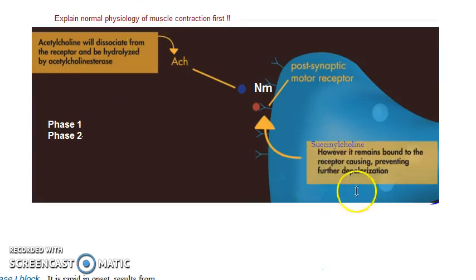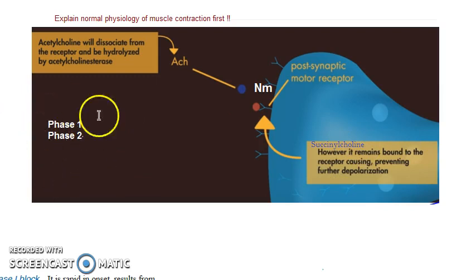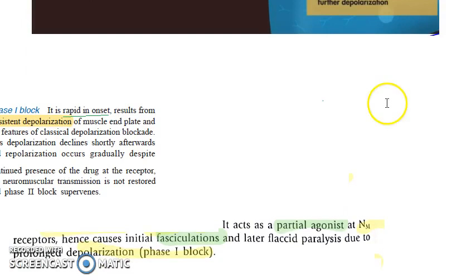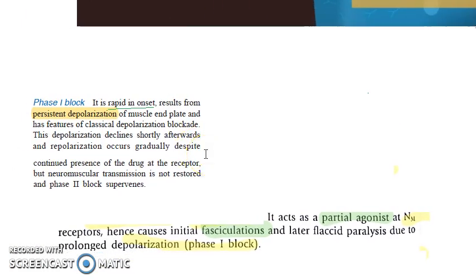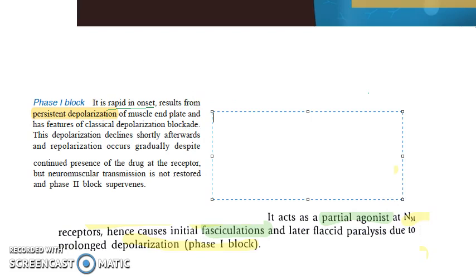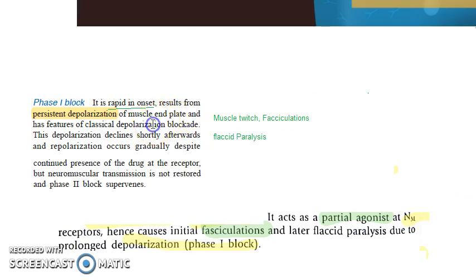Now let's look at how succinylcholine works. Succinylcholine binds to the same site as acetylcholine, but it will not detach like acetylcholine. So there are two phases of block. Phase 1 block: there is persistent depolarization. Since it has attached and persistent depolarization is maintained, there will be muscle twitch and fasciculation, followed by paralysis — classic paralysis. Because of prolonged depolarization, there will be a lot of muscle twitches.